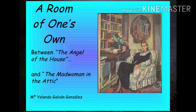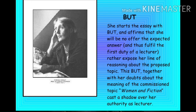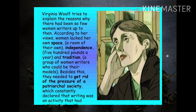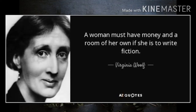Woolf's most famous non-fiction work is A Room of One's Own, which made Woolf's place permanent in the realm of feminist criticism. It was published in 1929 as a book-length essay and is considered a key work of feminist literary criticism. It was written following two lectures she delivered on women and fiction at Cambridge University the previous year. In it, she examines the historical disempowerment women have faced in social, educational and financial spheres. One of her most famous dictums from the book is: 'A woman must have money and a room of her own if she is to write fiction.'